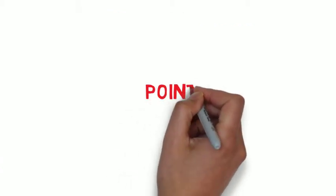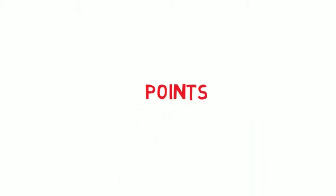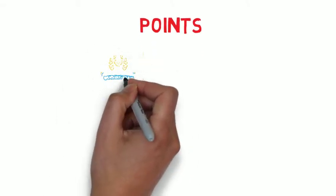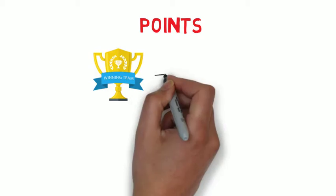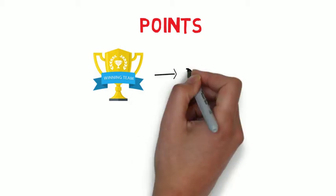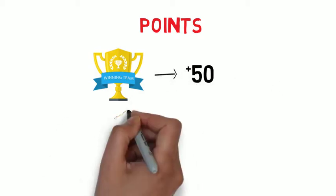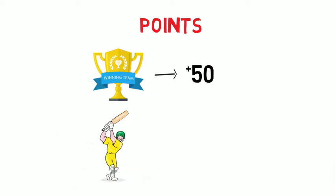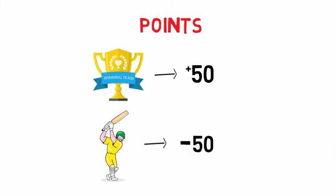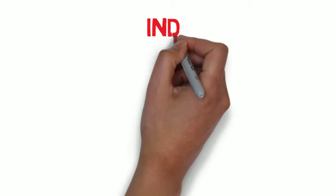Now, how are the points earned? It's a bit complicated, but if you focus on this, you'll get it. For every match under normal circumstances, the winning team gets points equivalent to the opposing team's rating plus 50, while the losing team gets points equal to the opposing team's rating minus 50. In case of a draw, the points earned are equivalent to the opposing team's rating.